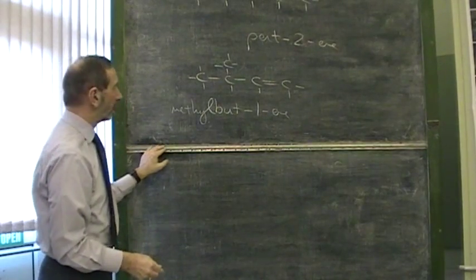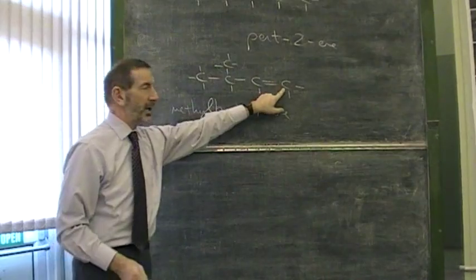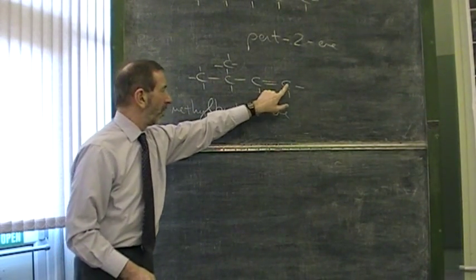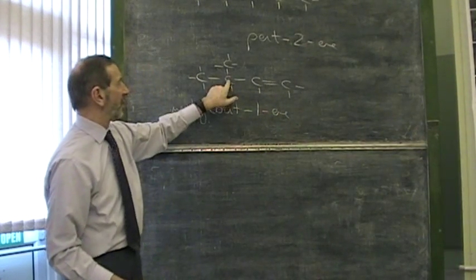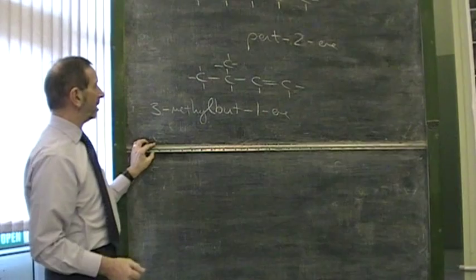Methyl butene. Is that good enough? No. Because this could have been there, for example. We have to show that if this is carbon atom number one, and remember we give the double bond priority by giving the smallest number, one, two, three. This is on the third of these carbon atoms. 3-methylbutene.